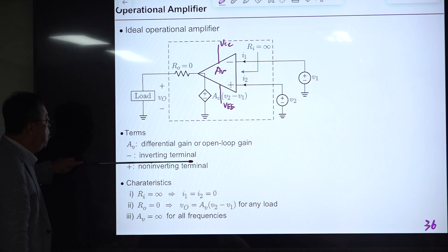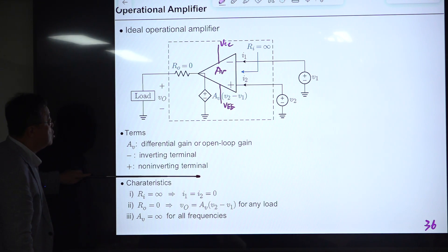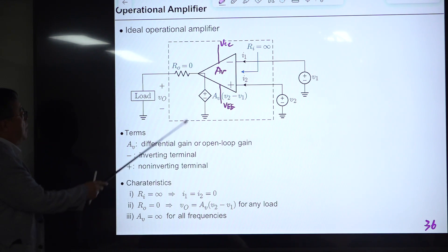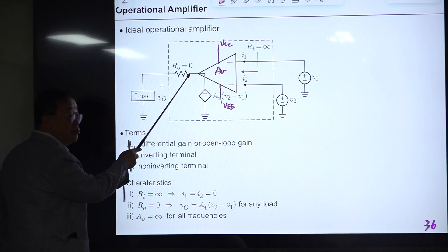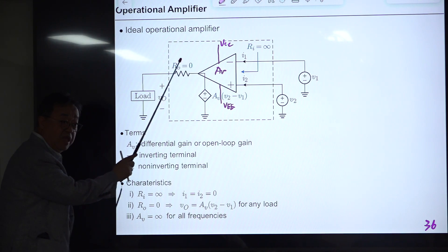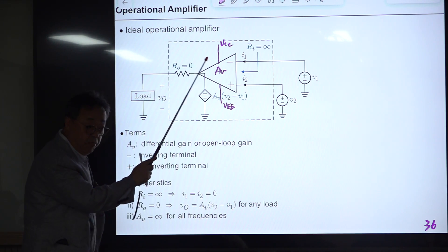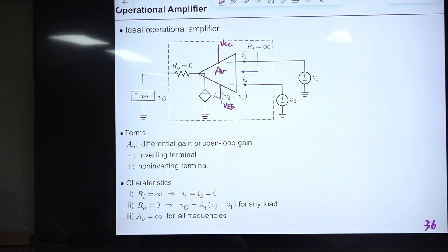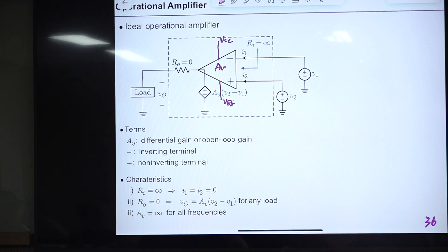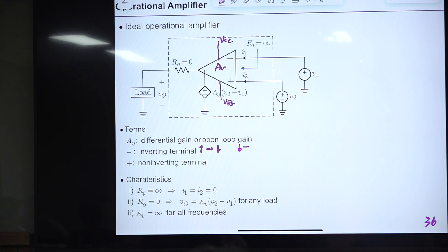The meaning of the inverting terminal: if the voltage at the inverting terminal increases, the output decreases. The op-amp is always used in closed-loop form with negative feedback. With feedback from output to the inverting terminal, the device is stable. If feedback is connected to the non-inverting terminal instead, that becomes positive feedback and it will oscillate.